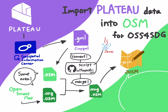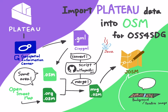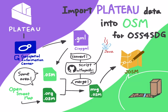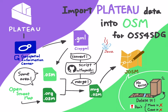When you do this, please set the background image to the satellite image of the year when it was taken, such as Bing and Mapbox, if possible. If there is a building object that clearly doesn't exist, just delete it. Then be careful not to do any operation but deletion.